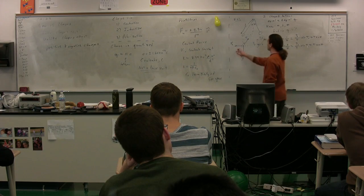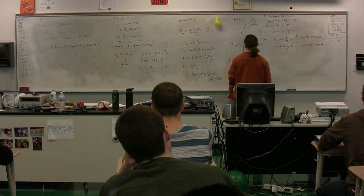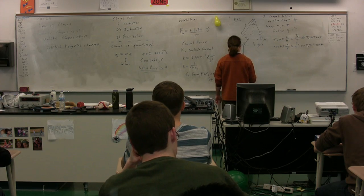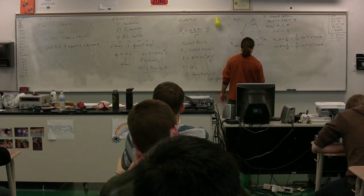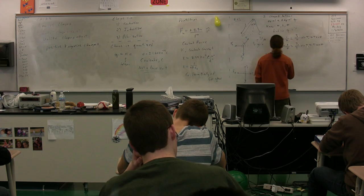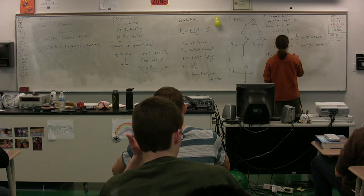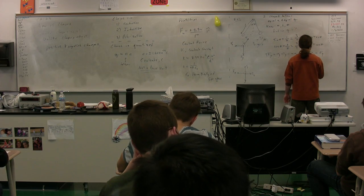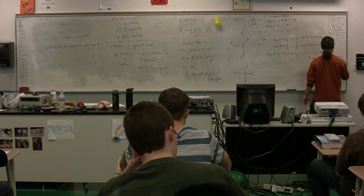We've drawn our free body diagram and broken the tension into its components. Now we sum the forces. Redrawing: force of gravity is straight down, electric force is to the left, tension in Y is up, tension in X is horizontal. Summing forces in Y: force of gravity is negative, tension Y is positive, equals zero since acceleration is zero. Therefore tension in the Y direction equals the force of gravity, so T times cosine of theta equals mg, meaning tension equals mg divided by cosine of theta.